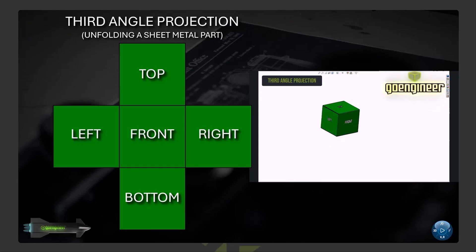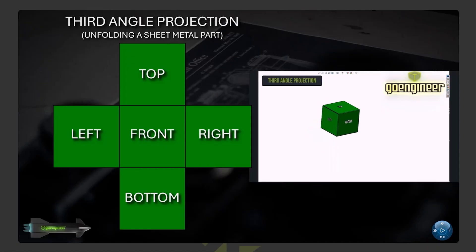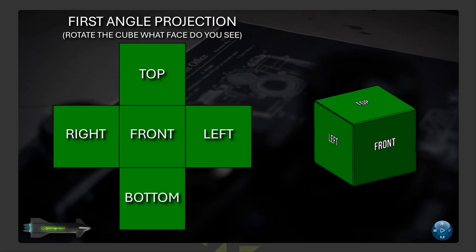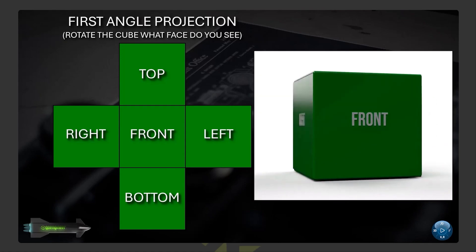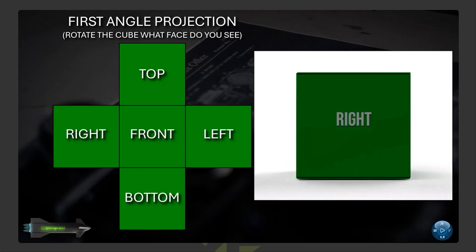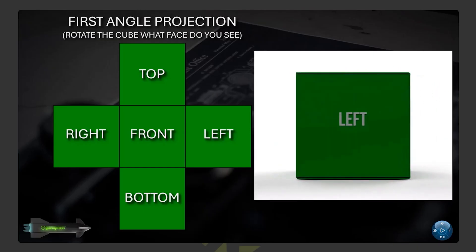For third angle projection, think of it like unfolding a sheet metal box — the left side unfolds to the left, right side to the right, top to the top, bottom to the bottom. First angle projection is different — instead of unfolding, think of rotating the cube. If I rotate the cube to the right, I see the left side view. Rotate the other way and the right side faces me. Third angle is like unfolding; first angle is like rotating the cube.